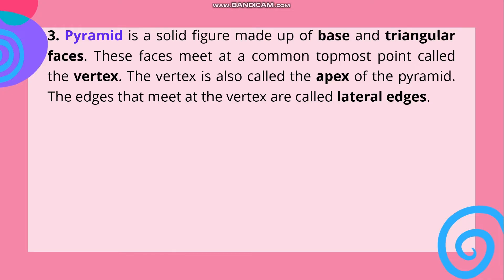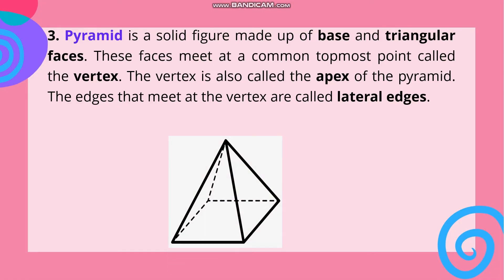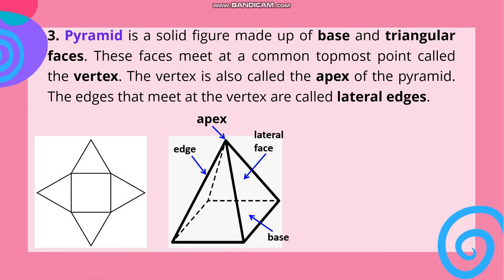Number three: Pyramid. A pyramid is a solid figure made up of a base and triangular faces. These faces meet at a common topmost point called the vertex, also called the apex of the pyramid. The edges that meet at the vertex are called lateral edges. Sa pyramid, ang tatandaan natin ay meron siyang isang base at ang mga lateral face niya ay triangle. Ang tuktok o itaas ng pyramid ay tinatawag na apex. This is the figure of a square pyramid showing the apex, edge, lateral face, and base. And this is the net of a square pyramid.